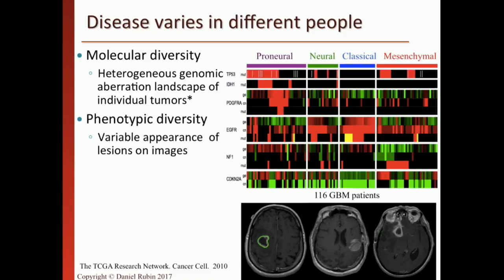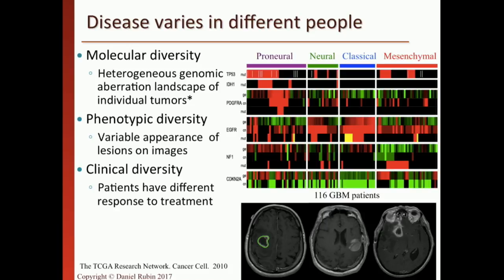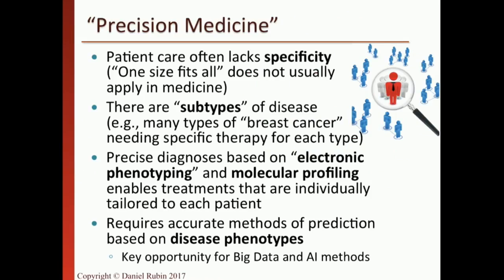Patients vary not only at the molecular level but also at the imaging level. These three patients have the same disease — glioblastoma multiforme — but their MRIs look very different. The phenotype varies as well as the molecular pattern, and clinical characteristics vary too. Our goal is to understand this variability and identify the particular subtype of disease a patient has, enabling precision medicine where we target treatment to the specific disease type.